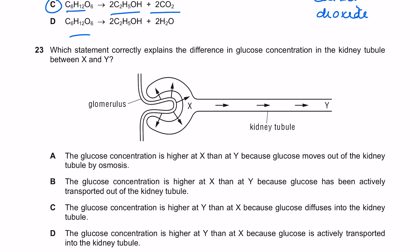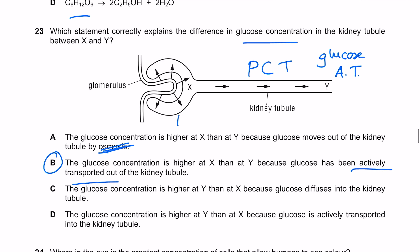Which statement correctly explains the difference in glucose concentration in the kidney tubule between X and Y? This part here is the proximal convoluted tubule. Remember glucose is reabsorbed back into the blood by active transport here. The glucose concentration is higher at X than at Y because glucose has been actively transported. That's literally what I just said. Here we have high glucose and here we have low glucose because that glucose has been reabsorbed into the blood.